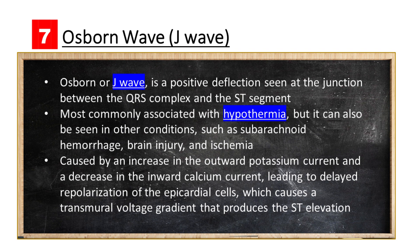The Osborne Wave is thought to be caused by an increase in the outward potassium current and a decrease in the inward calcium current, leading to delayed repolarization of the epicardial cells. This delayed repolarization causes a transmural voltage gradient that produces the ST segment elevation seen on the ECG.